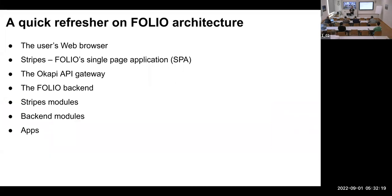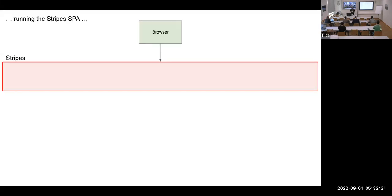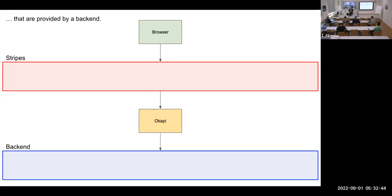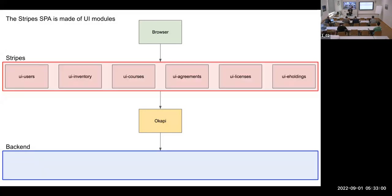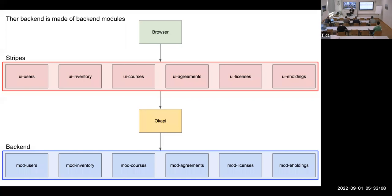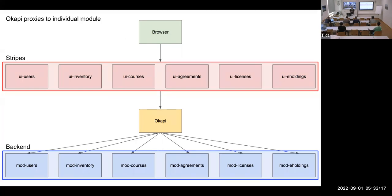I want to run through a quick refresher on the basics of FOLIO architecture — not DevOps details, just conceptually how it works. It has all these components: a user web browser running a single page application called Stripes; a third layer called Okapi, which is the API gateway; and a back end where databases live. Stripes is made up of UI modules, and the back end runs a bunch of back end modules. Okapi provides a facade by taking requests and routing them to the appropriate back end modules.